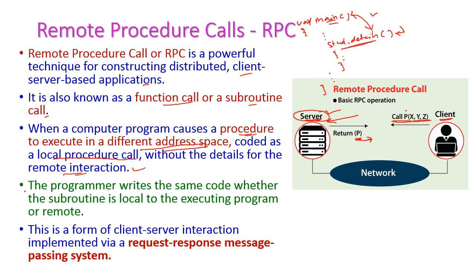The programmer has to write the same code whether the subroutine is local or available in a remote program. This form of client-server interaction is implemented via request and response message passing. We are passing only the messages between client and server. The server will receive the message in the form of a procedure call, and the client will receive the message in the form of the result of that procedure.